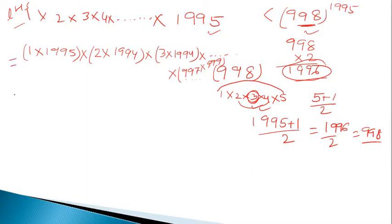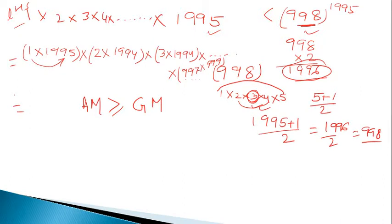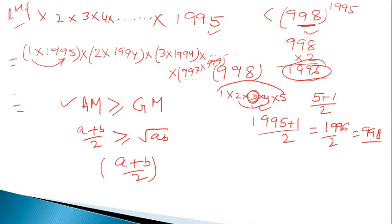Now observe that 1 × 1995 — to make this 1996 we add the two numbers. We know the relationship between the sum and product of two numbers: the AM-GM inequality states that the arithmetic mean is greater than or equal to the geometric mean. That is, (A + B)/2 ≥ √(AB), so ((A + B)/2)² ≥ A × B.